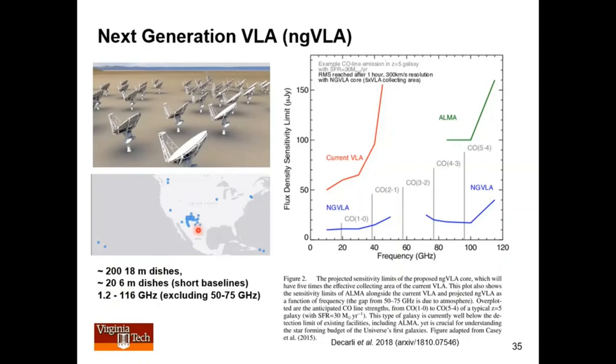They're also putting these out across the continental United States, into Canada, and again, Hawaii and Virgin Islands. The frequency range, 1.2 gigahertz to 116 gigahertz. I think that's to capture the CO line, which is about 115 gigahertz, probably excluding a big chunk of 50 to 75 gigahertz for reasons that are probably apparent to most people in this audience.